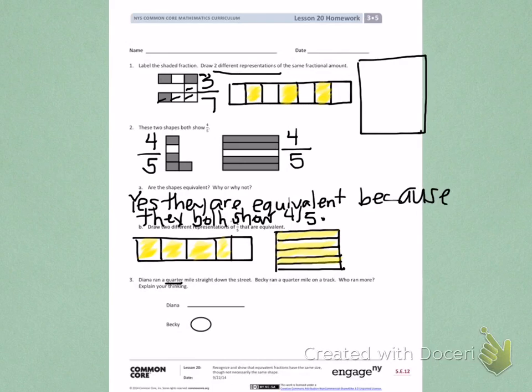Diana ran a quarter. A quarter is the same fraction as one-fourth.